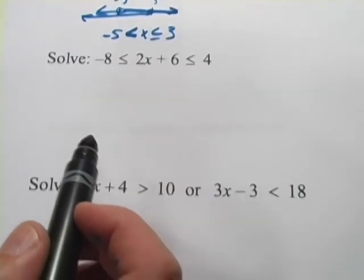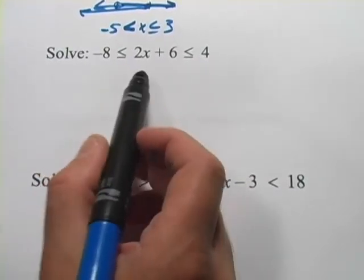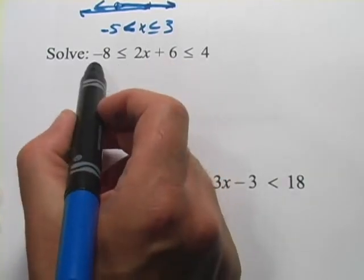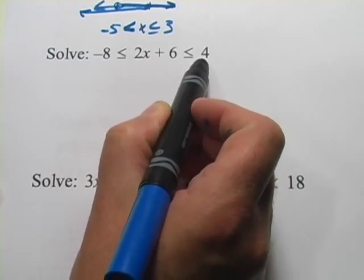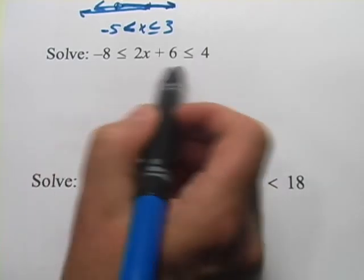Okay, let's do the next one here. This one is another type that can be a little bit tricky. We've got negative 8 is less than or equal to 2x plus 6 is less than or equal to 4. What the heck? How are we going to solve that one?